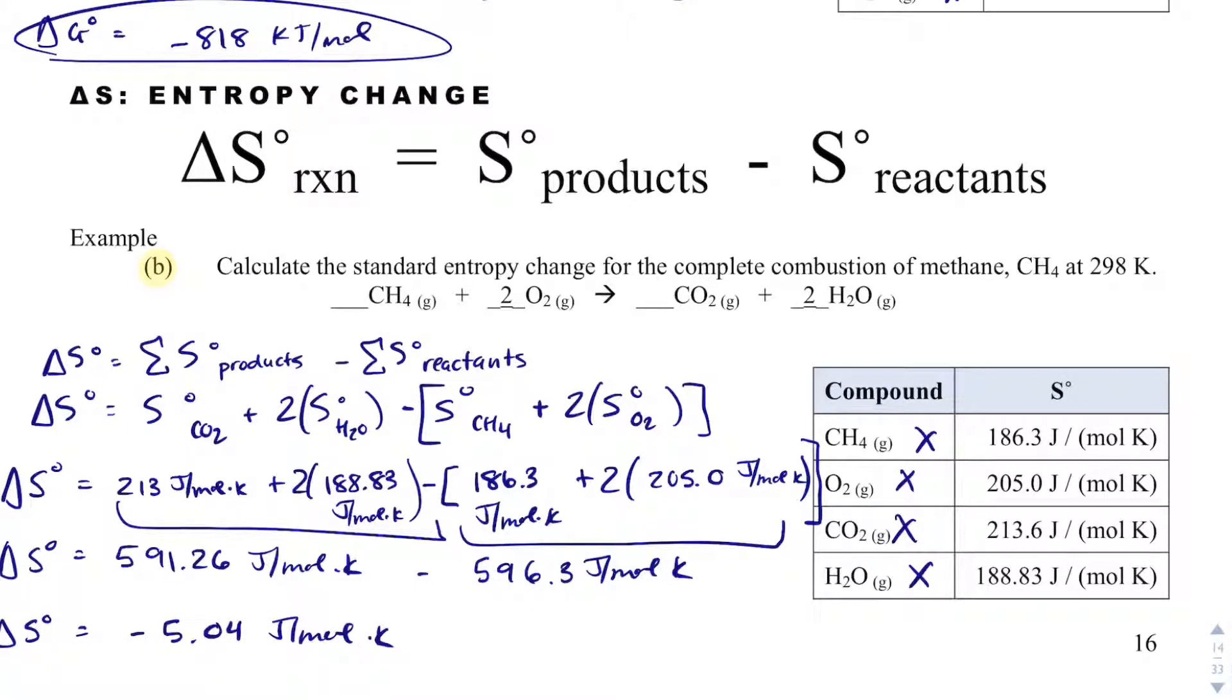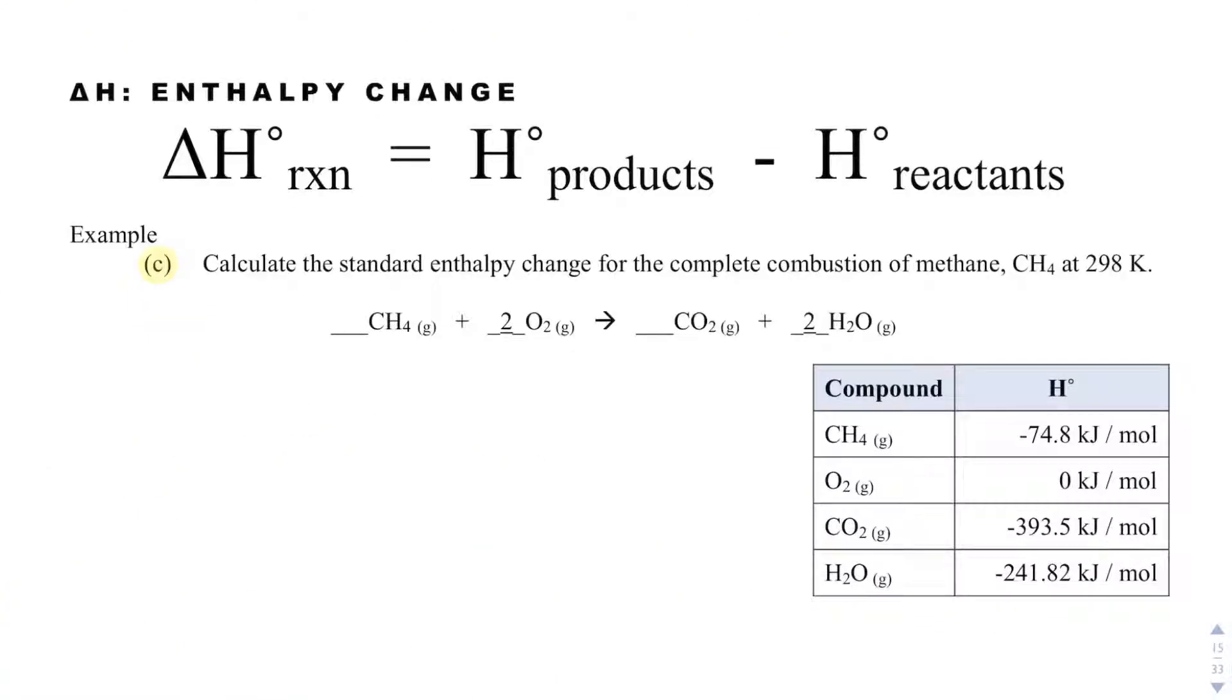This number actually makes some sense because I go from 3 gas moles to 3 gas moles. And so the entropy should be pretty close to 0 because not much is changing as far as the disorder is concerned. And actually we lose disorder. So somehow we become a little bit more ordered as this reaction goes on, which is not favorable. But with this, we have to look at the delta H to know if this is a spontaneous reaction.